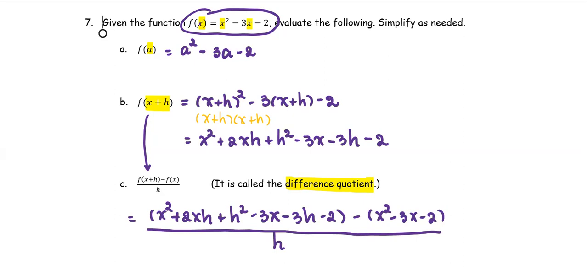After that, we simplify. We collect like terms. x squared minus x squared will be cancelled. Negative 3x and negative 3x cancel, negative 2 and negative 2 cancel. Now we have 2xh plus h squared minus 3h over h.